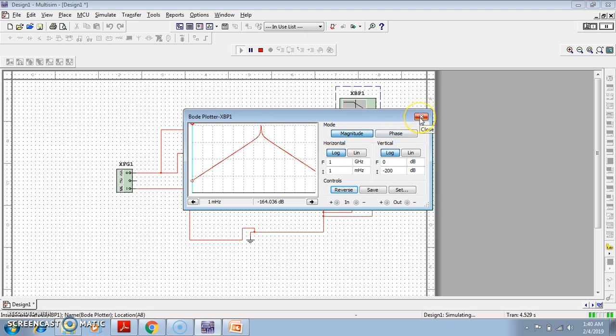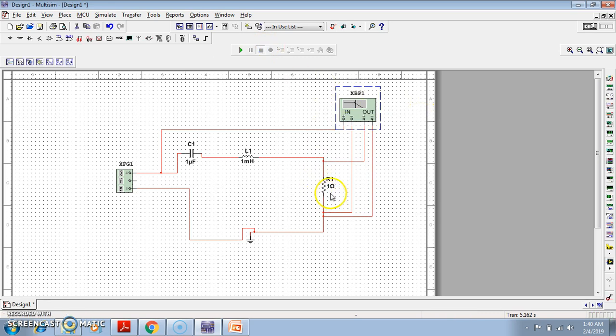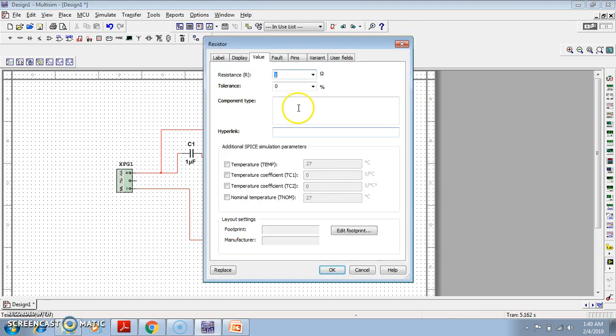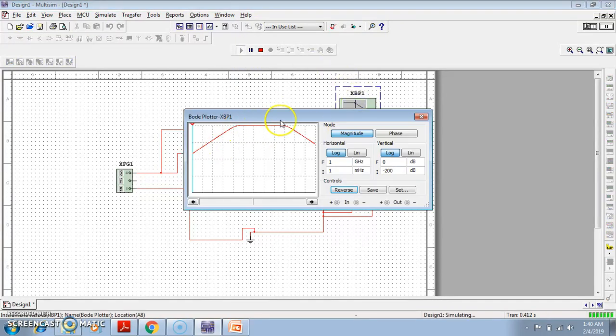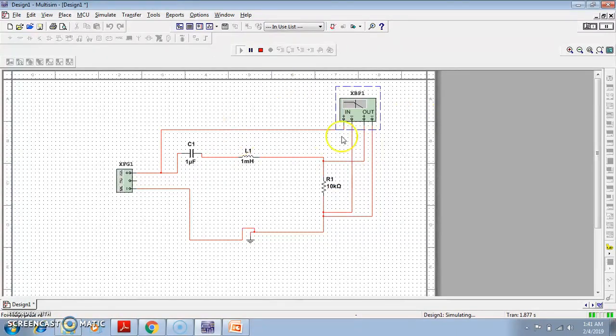Let me show you for another case. Let me take this as 10 kilohm. Then what will happen according to basic concept? The graph sharpness or steepness will reduce. The graph will not become so much sharp. So let us simulate. See, the graph becomes blunt. The bandwidth is increased. So in this way you can visualize the quality factor in Multisim.